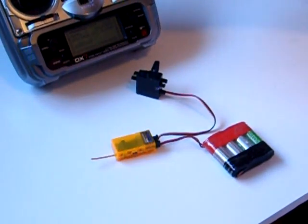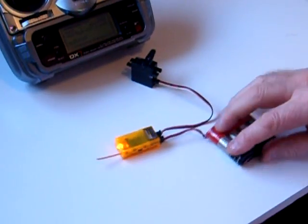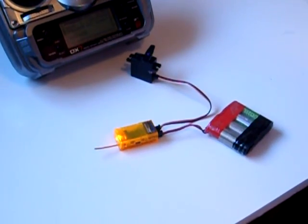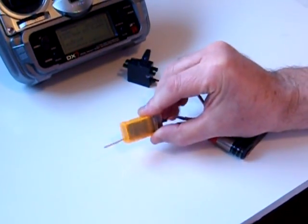The system still works, you'll notice that the servo still operates fine from the sticks. The reason the flashing light is there is so that you can tell you've had this brown-out when you land your model and see a slow flashing light.